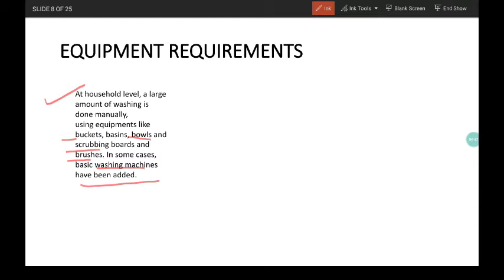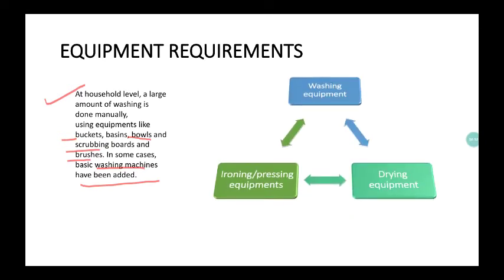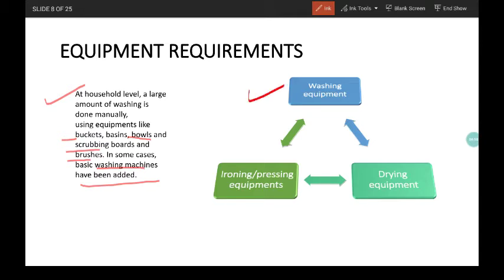When we are talking about industries, there are mainly three types of equipments. First one is washing equipment, then drying equipment and ironing or pressing equipment. At industrial level, three type of equipment is required.